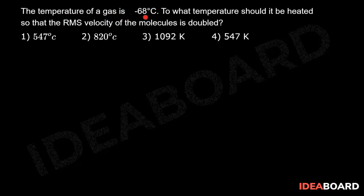The temperature of a gas is -68°C. To what temperature should it be heated so that the RMS velocity of the molecules is doubled?